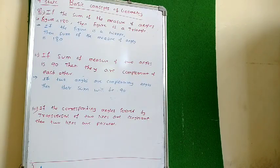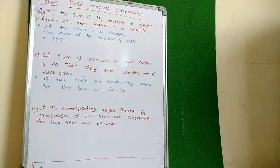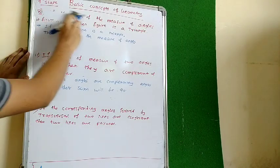If the corresponding angles formed by the transversal of two lines are congruent, then the lines are parallel. I will erase this first one. There are two lines. If corresponding angles — what are corresponding angles? When there are two lines, there is a transversal.